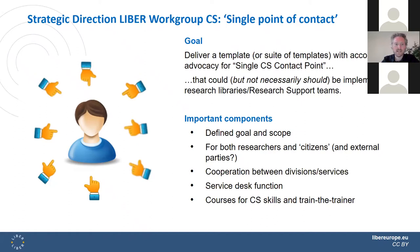Important components of such a single point of contact include: a defined goal and scope, which is very important; it should serve both researchers and citizens as well as possibly external parties. It should involve cooperation between divisions and services — you don't necessarily need all the expertise within your own team or library, as there's probably a lot of expertise within the university as a whole. It can have a service desk function, and if you have the expertise and resources, it can also offer courses for citizen science skills and train-the-trainer workshops.